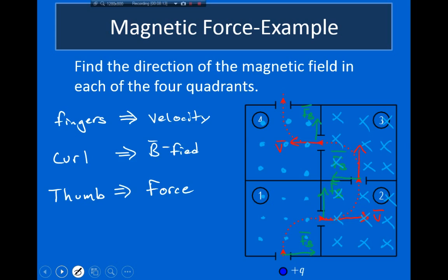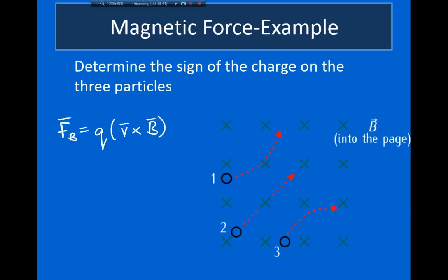Let's look at one more example about the direction of the magnetic force, where three particles have different charges and we figure out each particle's charge from the direction of the magnetic force. Remember, the magnetic force equals the charge times the cross product of velocity and magnetic field. If you multiply a vector by a positive scalar, the direction doesn't change, but multiplying by a negative number reverses the direction. So for a negatively charged particle, whatever direction you get from the right-hand rule, you flip it.